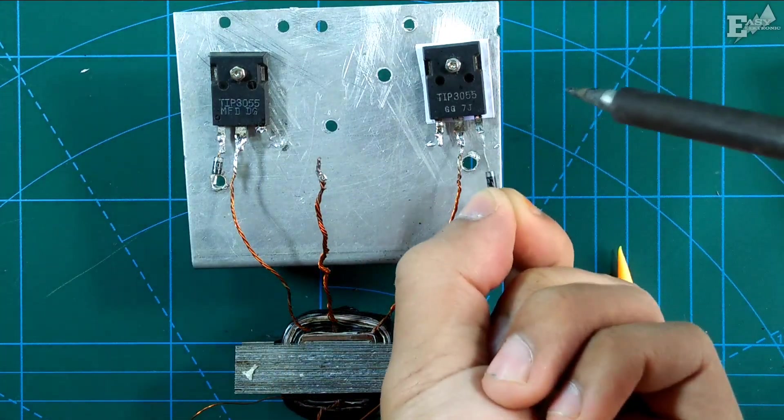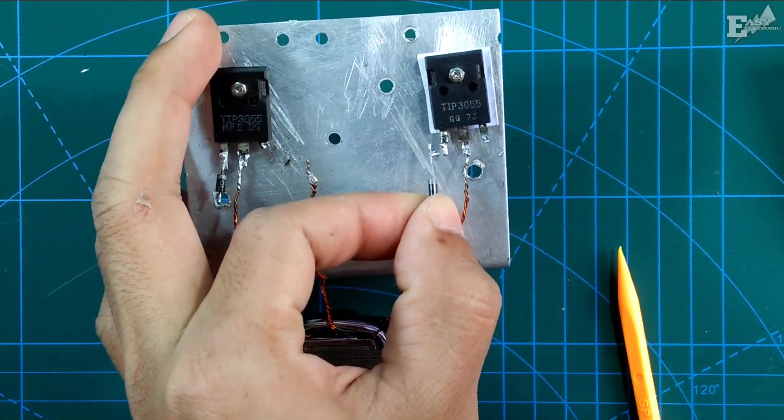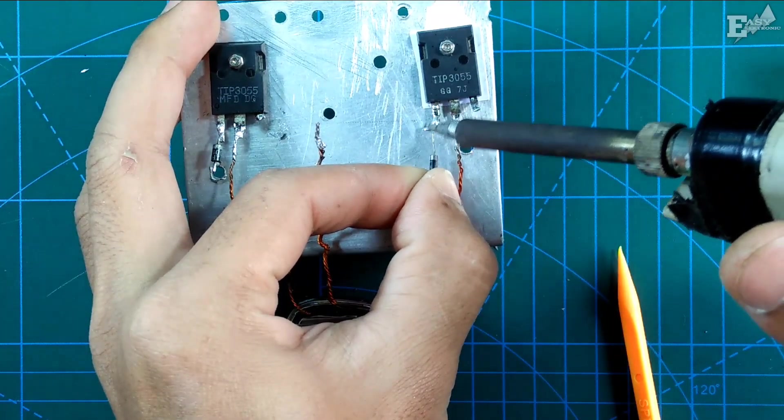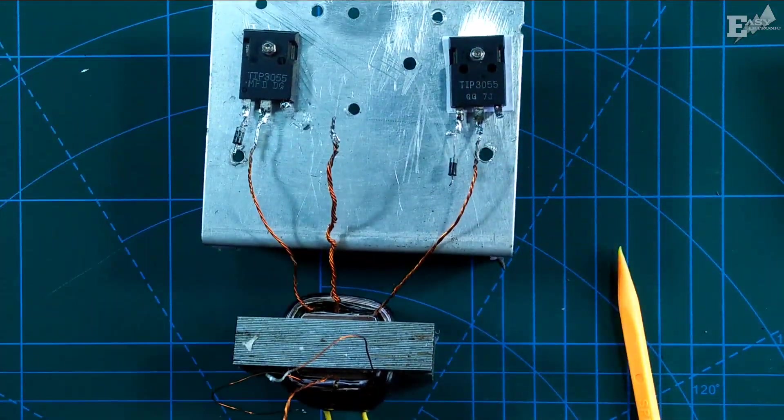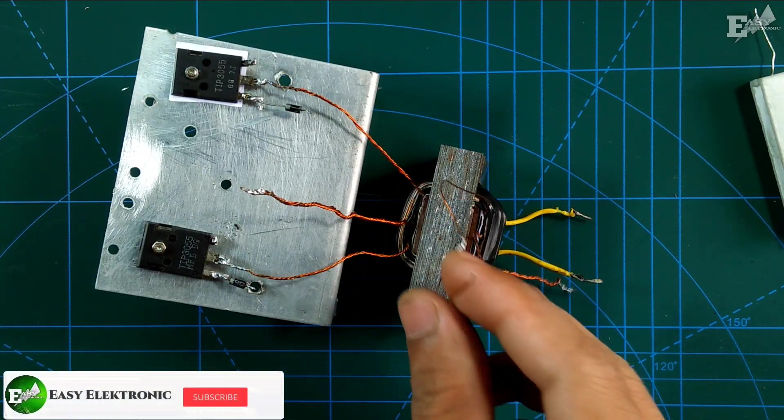Like this. Same for left and right. This will function to supply voltage to the base pin, which is generated from the feedback winding.